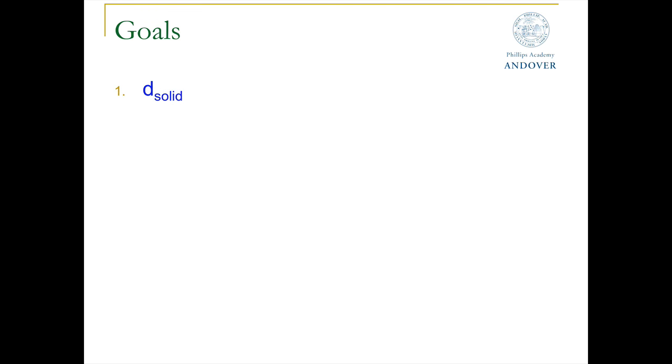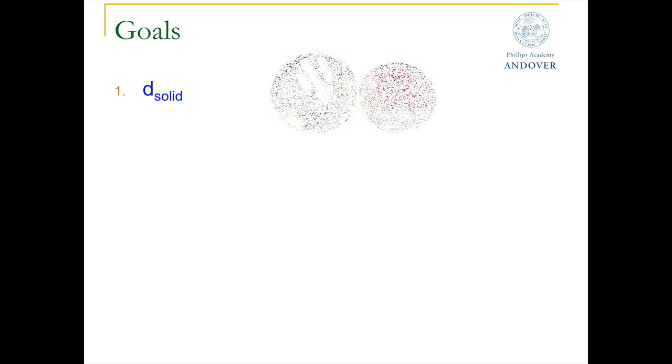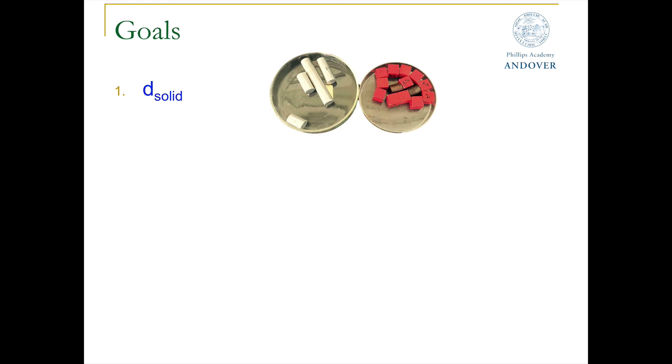As we noted earlier, there are two goals in this lab split up into two parts. The first part is to calculate the density of a solid. You have two solids to choose from. It doesn't matter which one you pick. You're free to choose the cylindrical object on the left or the cubic object on the right. However, this is going to be part one.